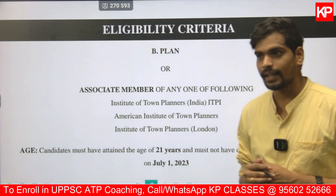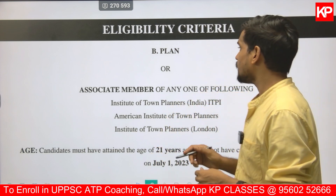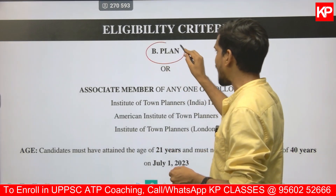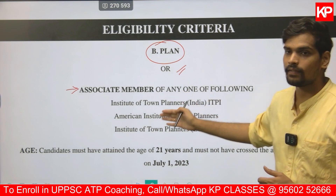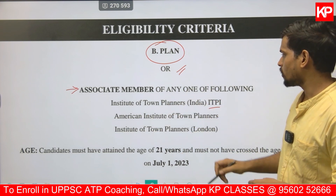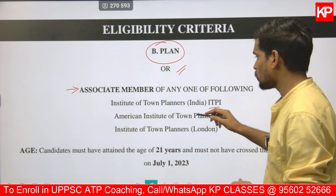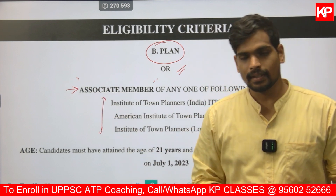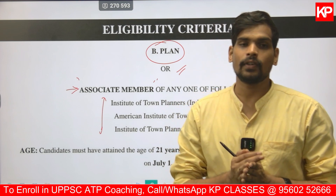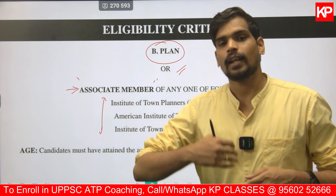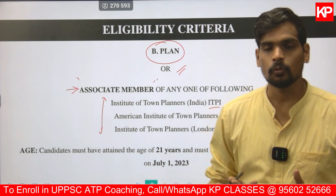The eligibility criteria as per the official advertisement on the UPPSC website: you should either have a B.Plan degree, or you should be an associate member of one of three organizations — ITPI (Indian Institute of Town Planners), the American Institute of Town Planners, or the Institute of Town Planners London. If you have a bachelor's in civil engineering or architecture and then completed your M.Plan and registered with ITPI, you will be eligible.